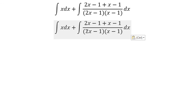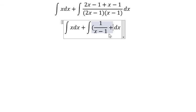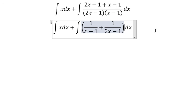And now we have two integrals. You will get 1 over (x minus 1) plus 1 over (2x minus 1).